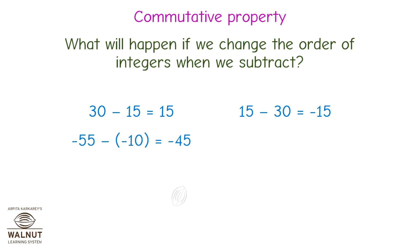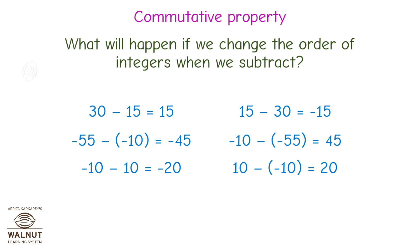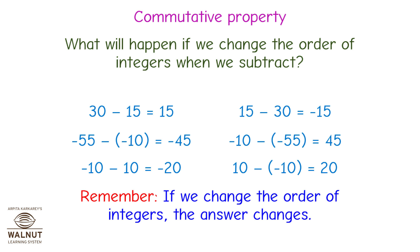Minus 55 minus minus 10 is equal to minus 45. Let's try one more. Minus 10 minus 10 is equal to minus 20, which is not the same as 10 minus minus 10, which is equal to minus 20. Remember, if we change the order of integers, the answer changes. While subtracting the integers, the order in which they are written is important. Therefore, we say that the subtraction of integers is not commutative.